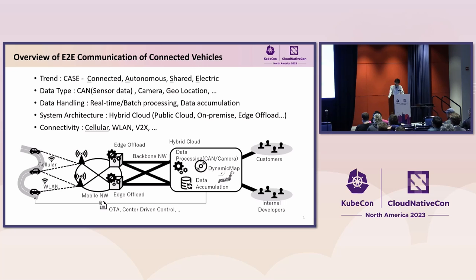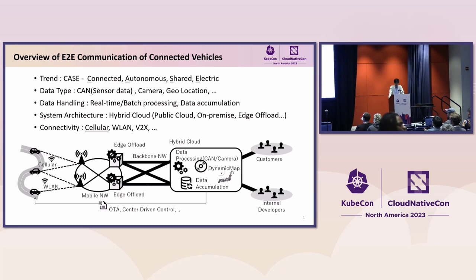Let me introduce the concept of connected vehicle service. In the automotive and transportation industry, we have a framework known as CASE. It stands for connected, autonomous, shared, and electric. This framework outlines the key trends shaping the future of vehicles and mobility solutions. When it comes to data types, we have important data like CAN, camera, and LiDAR — they provide valuable insights and are the basis for technologies such as autonomous vehicles and real-time mapping. In different situations, we need specific data processing approaches: some scenarios call for real-time responses while others benefit from batch processing efficiency.